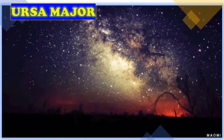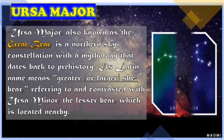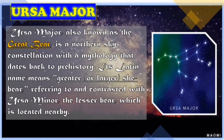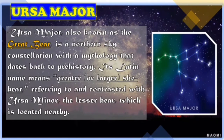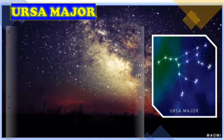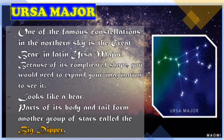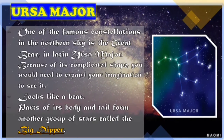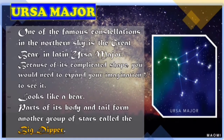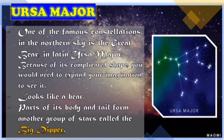Here are some examples of constellations. Number one is Ursa Major, also known as the Great Bear. It is a northern sky constellation with a mythology that dates back to prehistory. Its Latin name means great or larger bear, referring to and contrasted with Ursa Minor, the lesser bear located nearby. Because of its complicated shape, you would need to expand your imagination to see it looks like a bear. Parts of its body and tail form another group of stars called the Big Dipper, which is a kind of asterism.